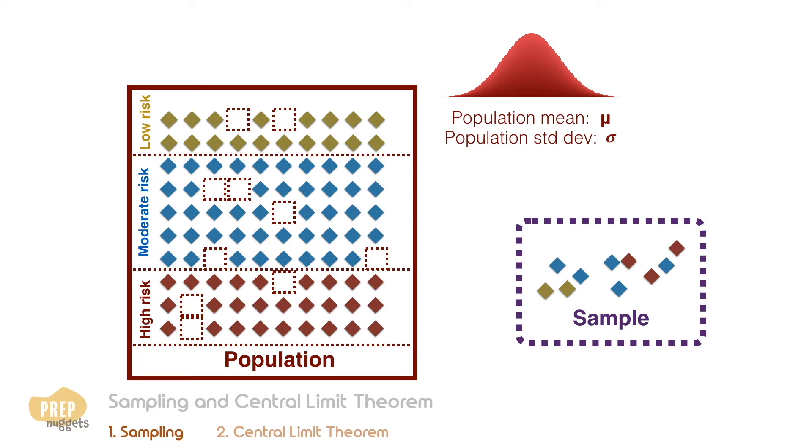When we sample from the population, we attempt to estimate the true population mean and standard deviation. We do this by calculating the sample mean, x-bar, and standard deviation s.